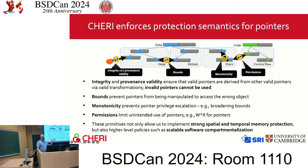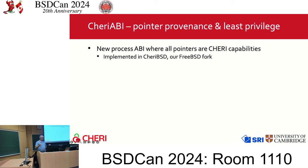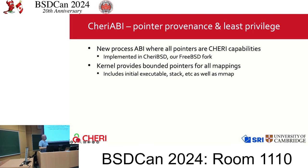CHERI ABI is a process ABI — a new process abstraction like 32-bit versus 64-bit processes — where all pointers are CHERI capabilities. It's implemented on CheriBSD, our FreeBSD fork, and it's our default ABI. The kernel in CHERI ABI provides bounded pointers for all mappings, so you can't access any address space until the kernel grants you access to specific bits — things like your initial executable, your stack, things you've mmapped.